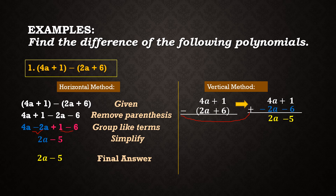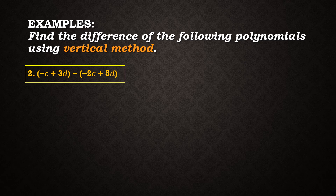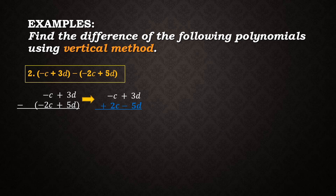For the next examples we are going to use the vertical method. For example number 2, let us subtract the quantity negative c plus 3d minus the quantity negative 2c plus 5d. Using the vertical method, let us align the like terms. We copy our minuend, which is negative c plus 3d, then change the operation to addition and write the opposite signs of the subtrahend, obtaining negative c plus 3d plus 2c minus 5d. Then we apply addition: negative c plus 2c is equal to c, while 3d plus negative 5d is equal to negative 2d. So the final answer is c minus 2d.